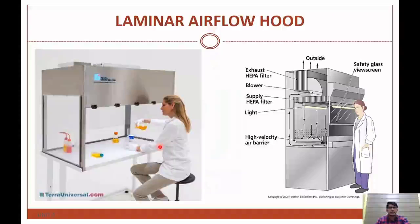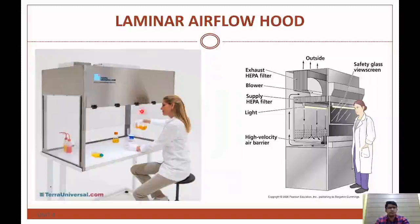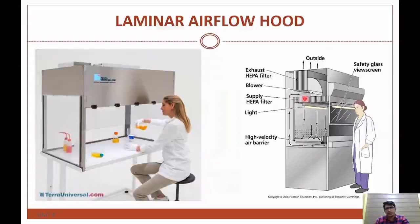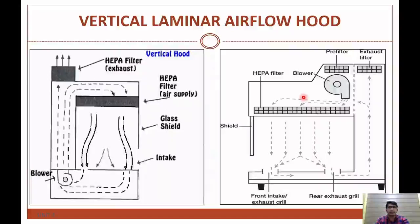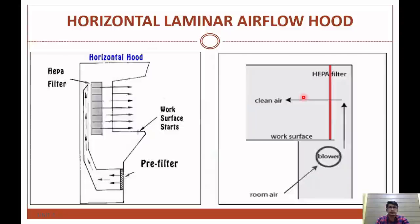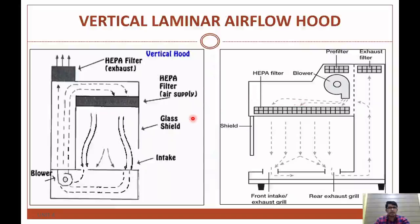This is the figure of a laminar air flow unit. We use the HEPA filter in the unit. The two types of laminar air flow units are the vertical laminar air flow hood and the horizontal laminar air flow hood. In the vertical laminar air flow unit, the air flows downward.